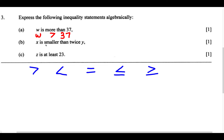For part B, it says X is smaller than twice Y. We have the variable X, and it says is smaller than twice Y. For the words "is smaller than," the greater than symbol won't work, equals won't work, less than or equal to won't work because it says smaller than, and greater than or equal to won't work either. So the only symbol that works is the less than symbol. So we can say X is less than twice Y.